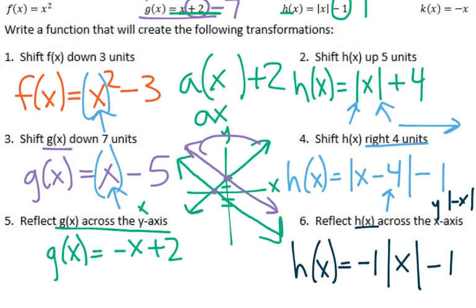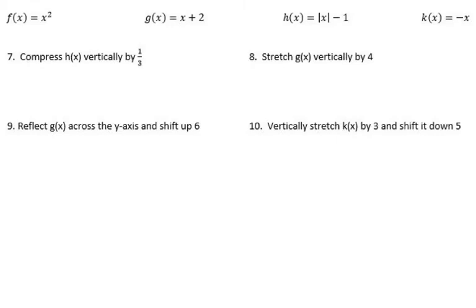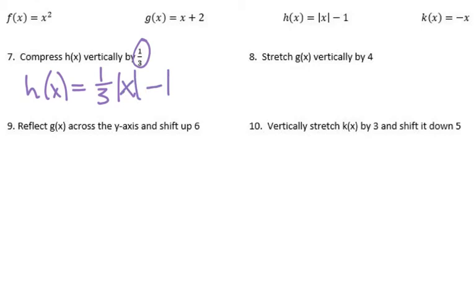I hope you guys have been trying these problems before you watch the video so you can use this to check your answers. Now the last four. Number seven: compress h of x vertically by one-third — that's the A value, so h of x equals one-third absolute value of x minus one. Number eight: to stretch g of x vertically by four, we go g of x equals four times x plus two — just putting that A in front of the x.